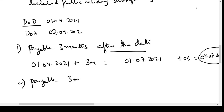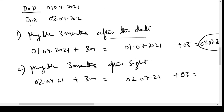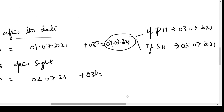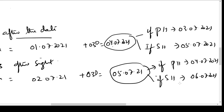Next example: payable 3 months after sight. Since it says 'after sight,' we start from the date of acceptance — 2nd April 2021 — and add 3 months to get 2nd July 2021, plus 3 days of grace, giving 5th July 2021 as the due date. If 5th July is a known public holiday, then 4th July will be the due date. If it is subsequently declared as a holiday, then 6th July — if it is the next working day — will be the due date. If 6th July is also a public holiday, then 7th July becomes the due date.